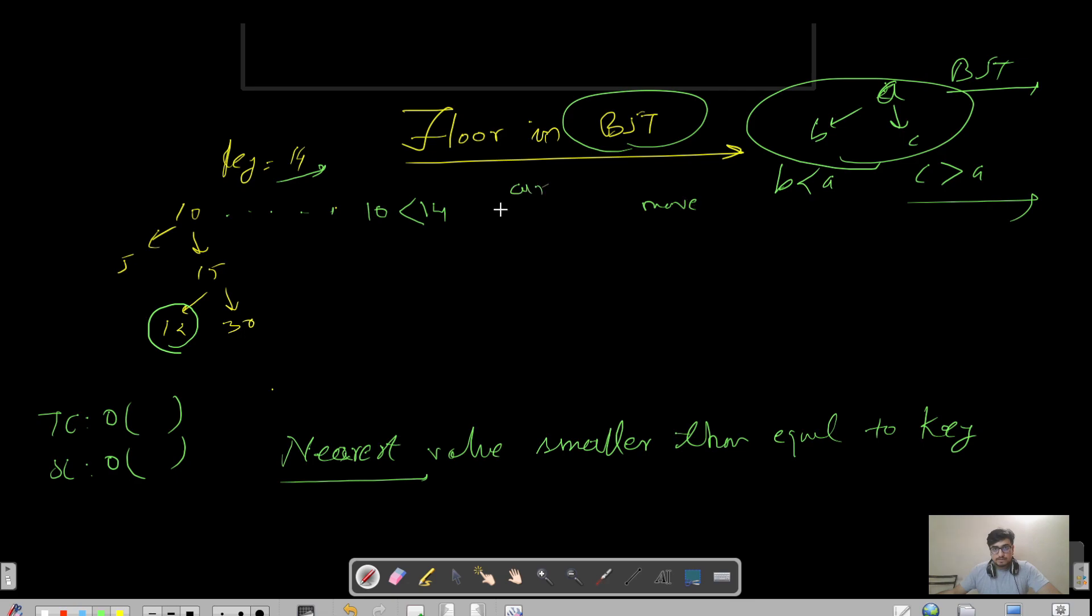Right now we have 10, so if 10 needs to catch 14, it needs to be in the existing values. And in any particular root node, that value in left or right child, the right child has value greater than the root. So definitely we have to make a move towards the right child.